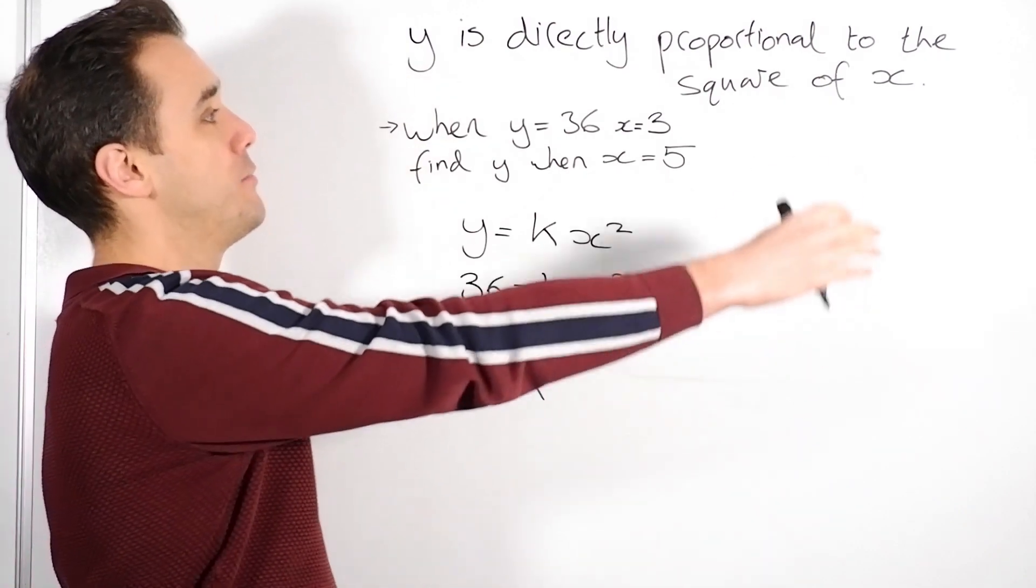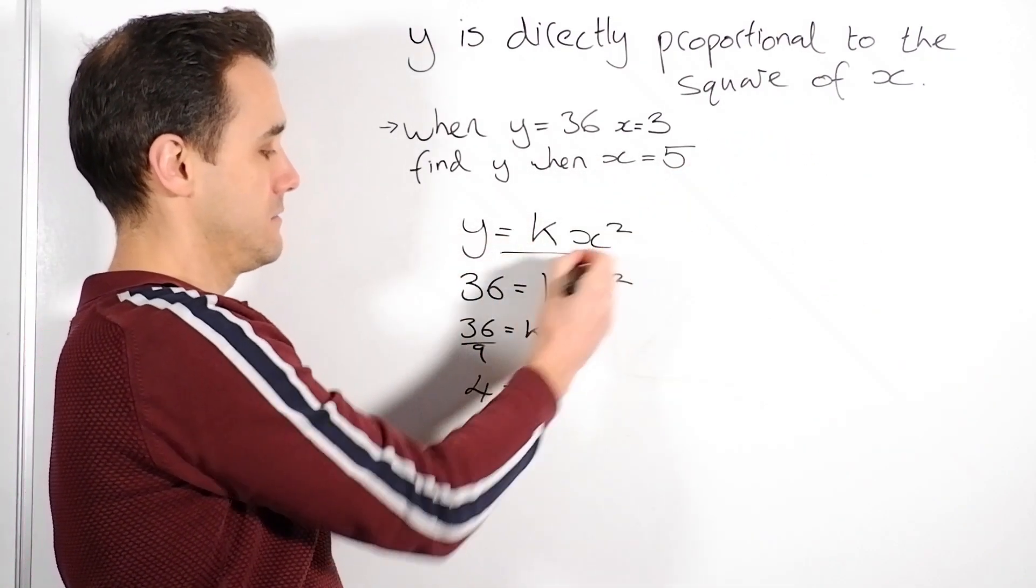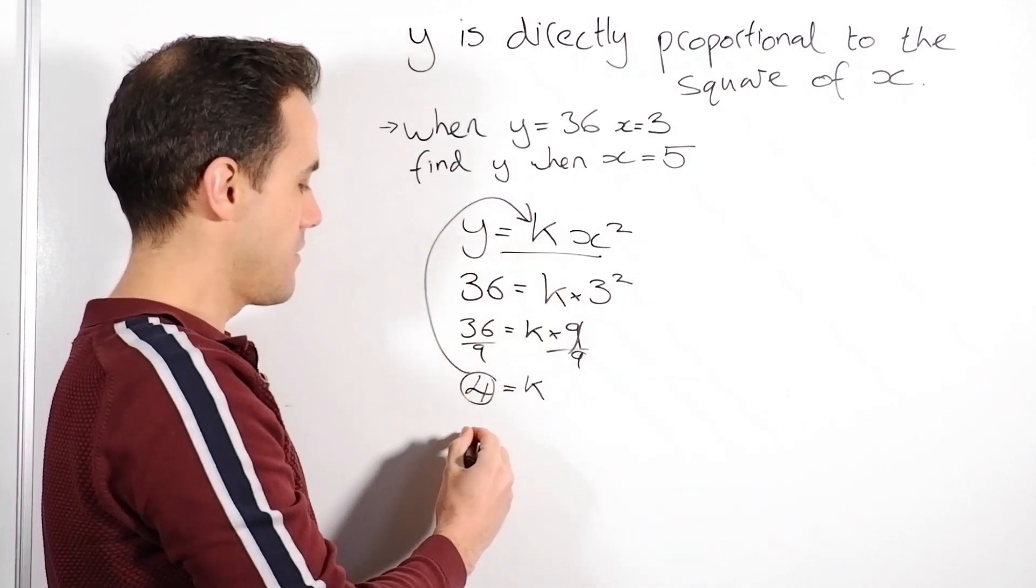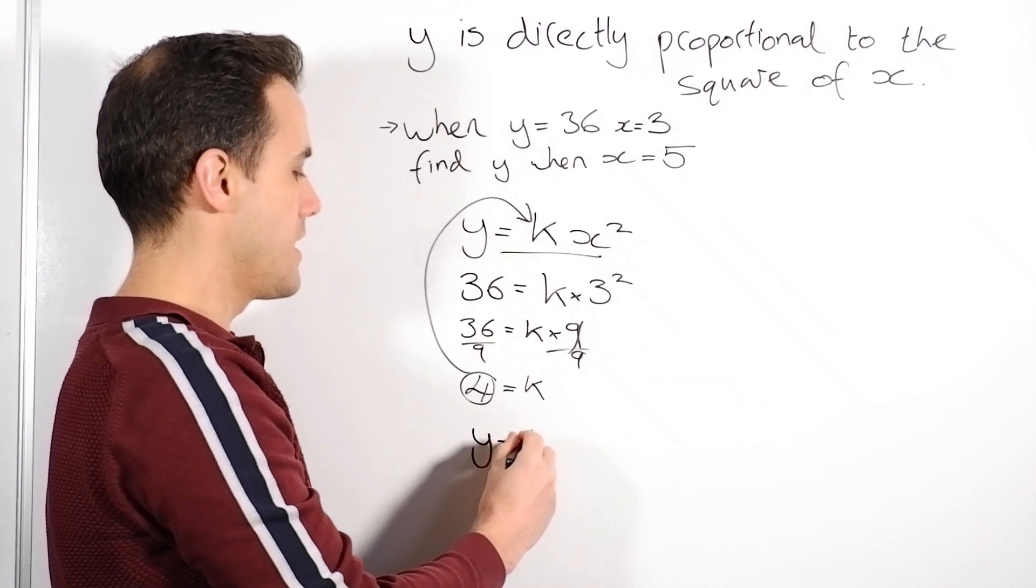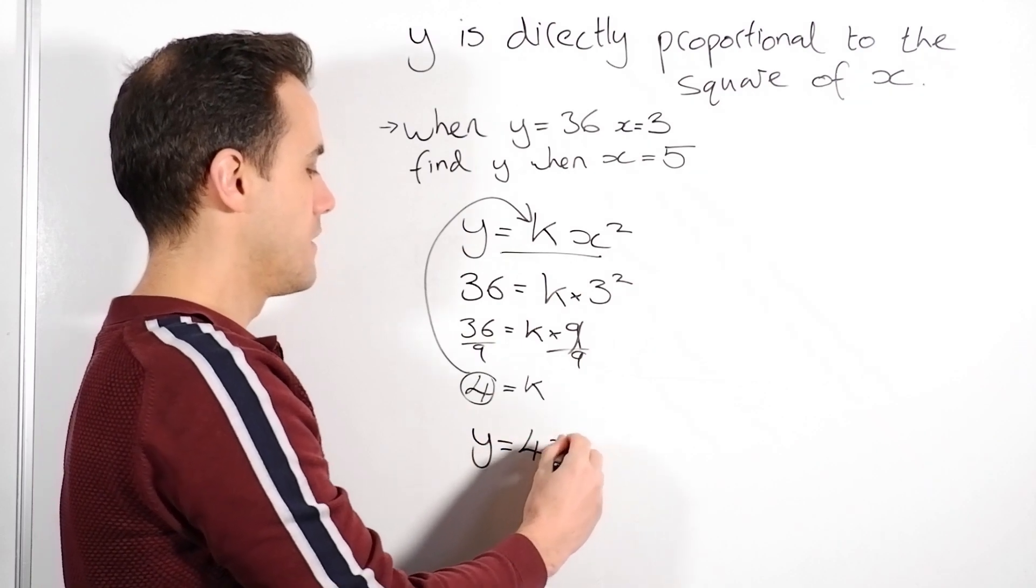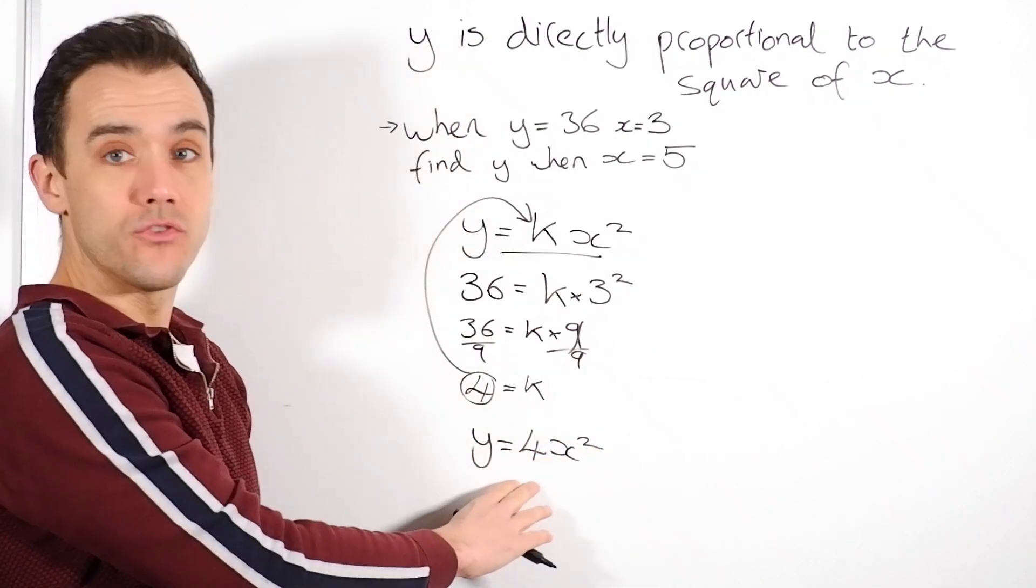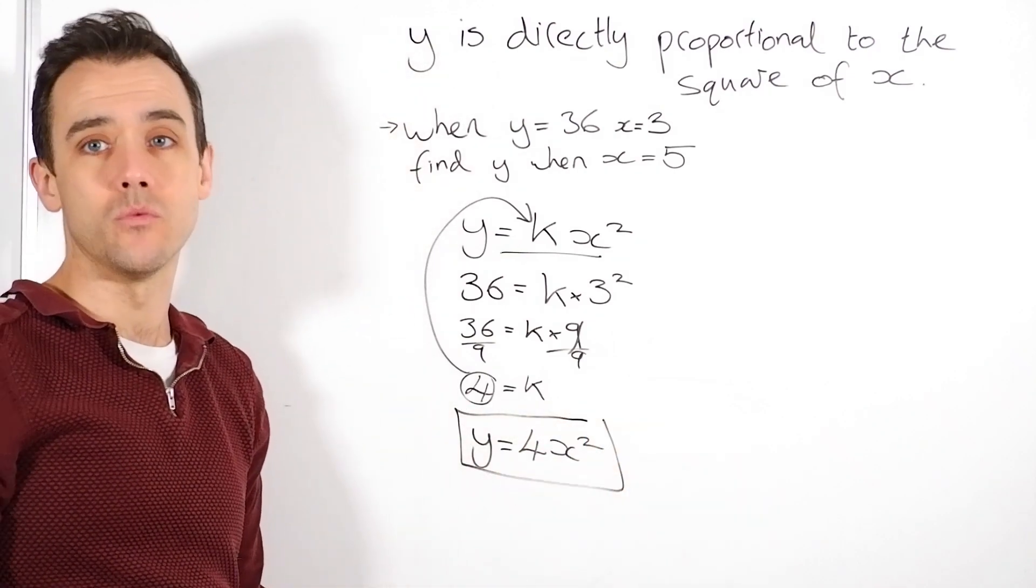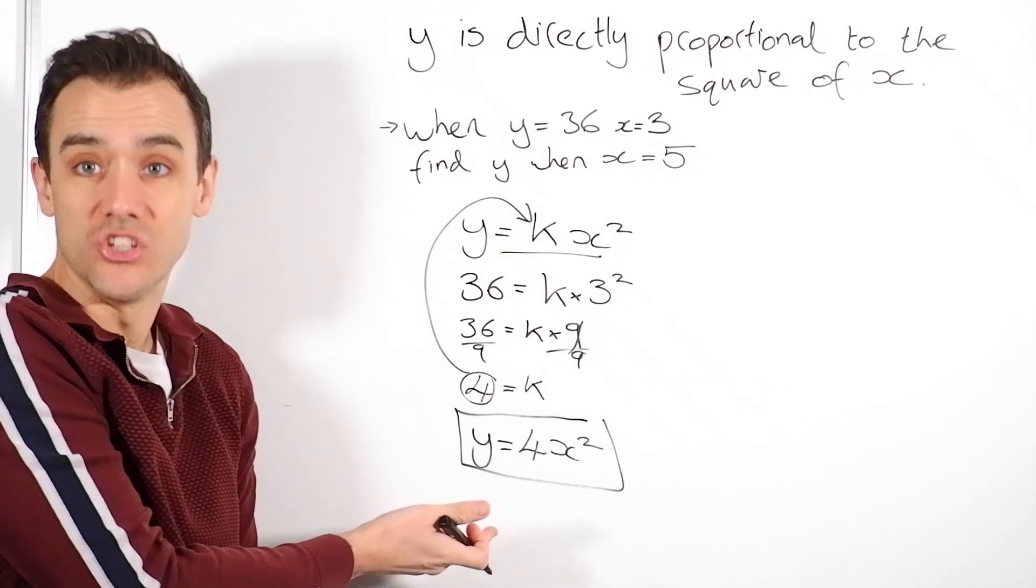Now we know k, we put that back into here. So that 4 goes back instead of our k. And we find our equation is y is 4x squared. So now we've got this equation. That could be the end of the question. It could have just said find an equation for y in terms of x, in which case you're done.